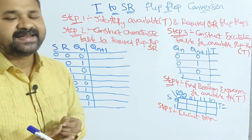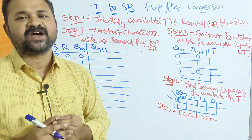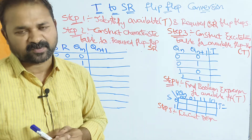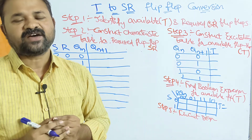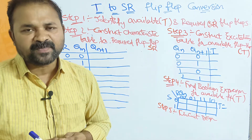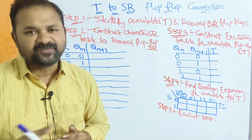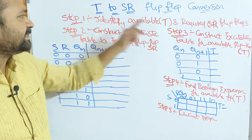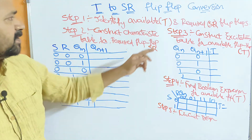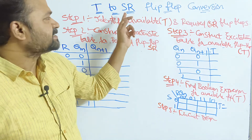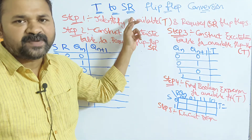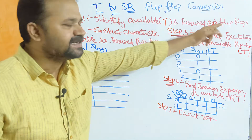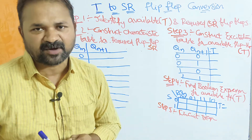Step 1: identify available and required flip-flop. Available flip-flop means input flip-flop — that is T flip-flop. Whereas required flip-flop means output flip-flop — that is SR flip-flop.